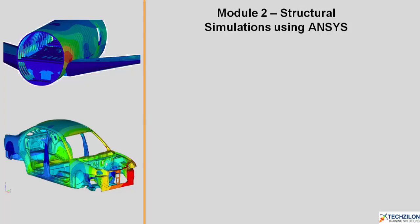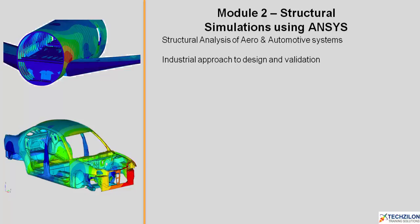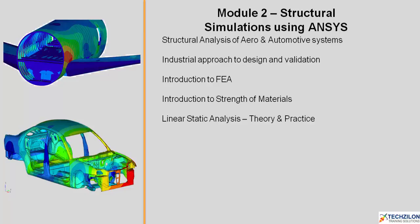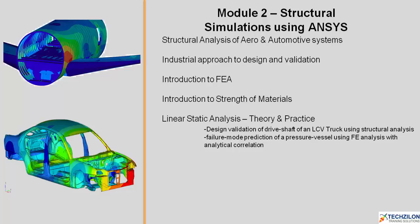In module 2, we'll be looking into structural simulations using ANSYS. We'll learn structural analysis of aero and automotive systems, industrial approach to design and validation, introduction to FEA, and introduction to strength of materials. Under linear static analysis — both theory and practice — we will learn design validation of a drive shaft of an LCV truck, failure mode prediction of a pressure vessel using FEA with analytical correlation, and estimation of load carrying capacity of a lower control arm of a heavy truck using simulations.